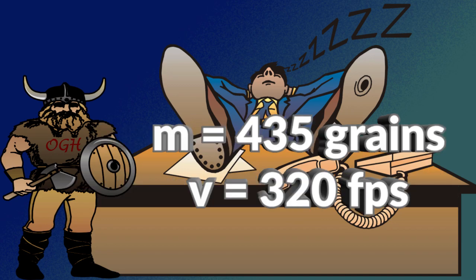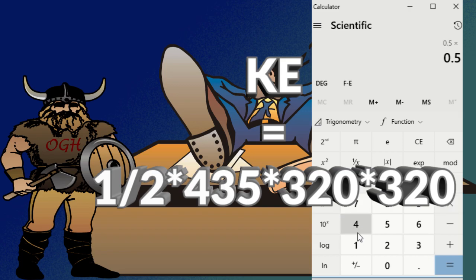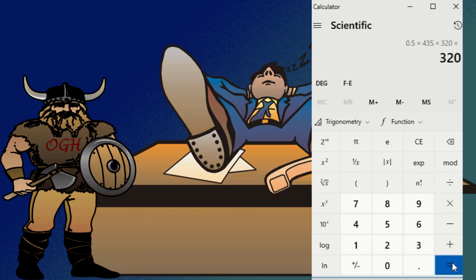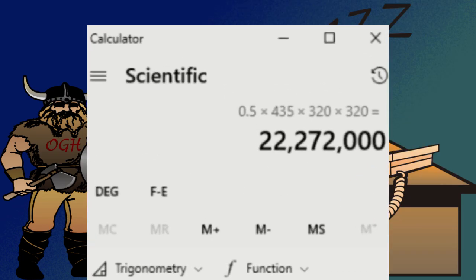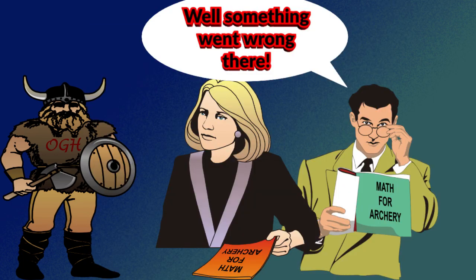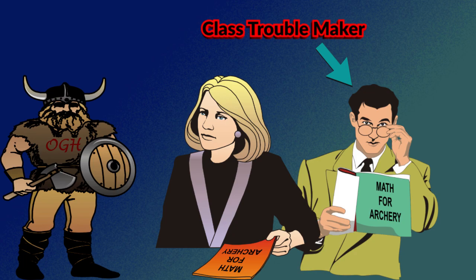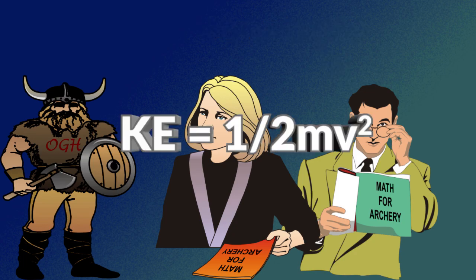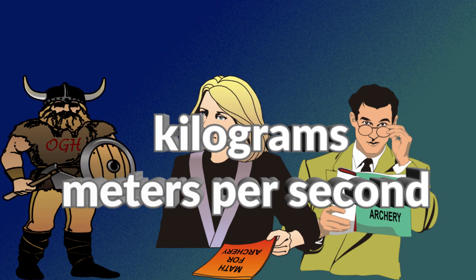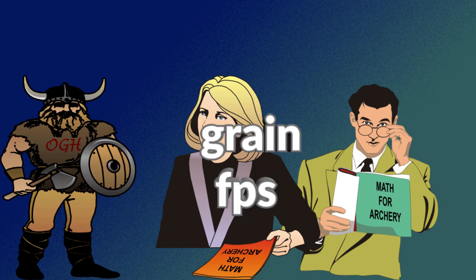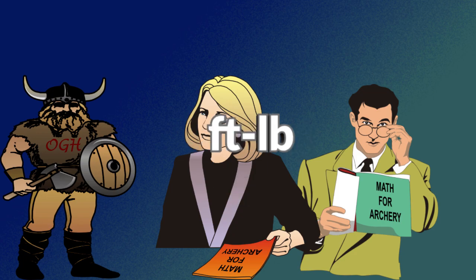Let's run some numbers using that arrow weight and speed mentioned before. Kinetic energy equals one half times 435 times 320 times 320, with a result of 22,272,000. Well, something went wrong there. I see I got your attention. The problem with the formula one half mv squared is it is based on using metric units of kilograms and meters per second, and the result is in joules. I used grains and feet per second trying to get foot pounds.